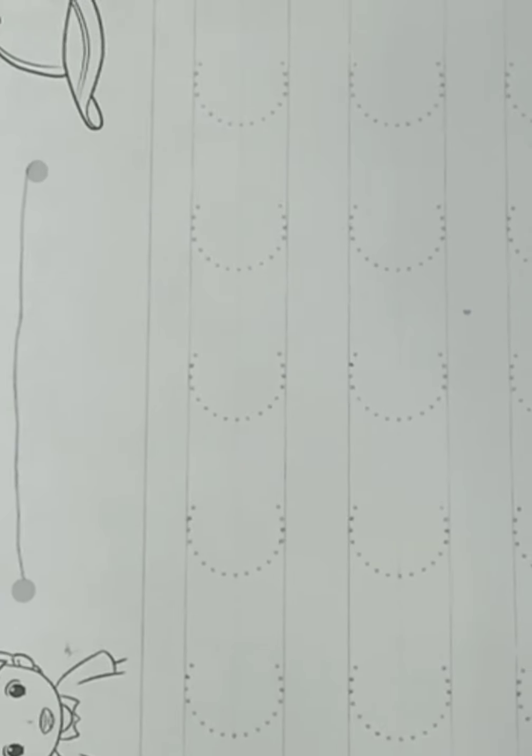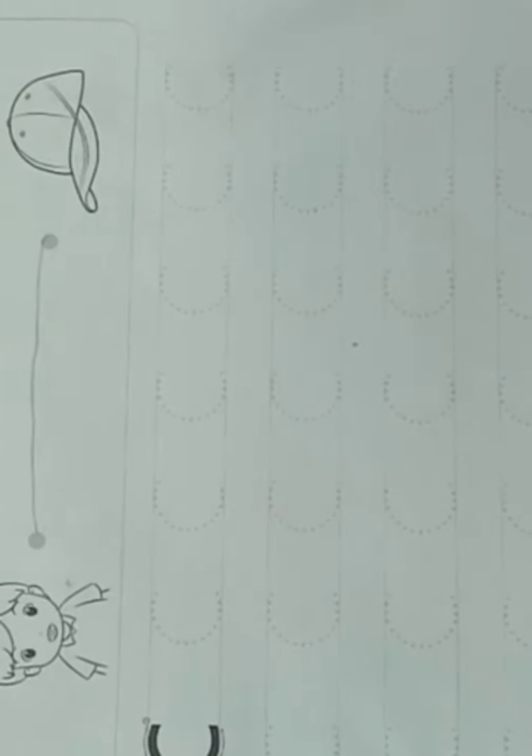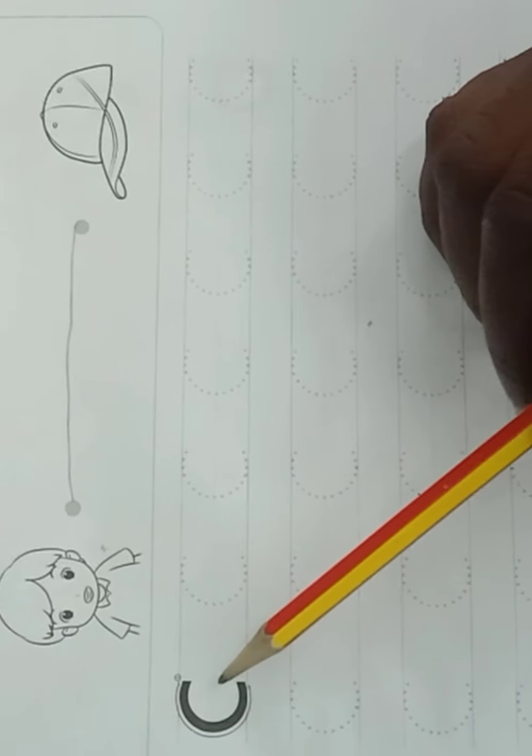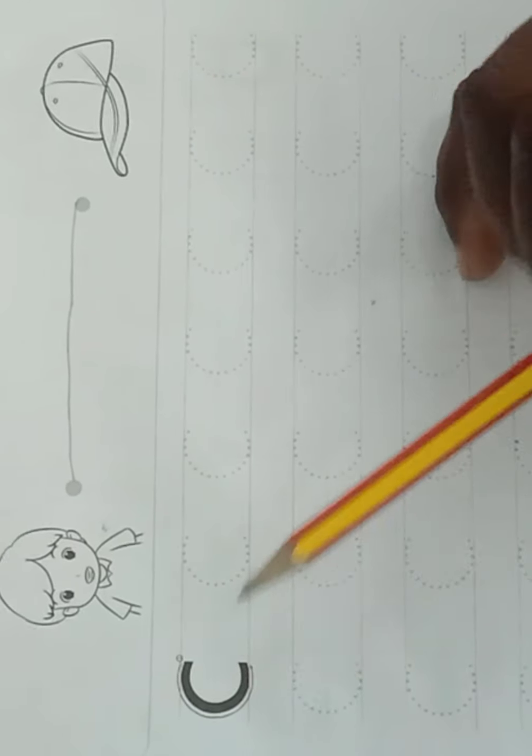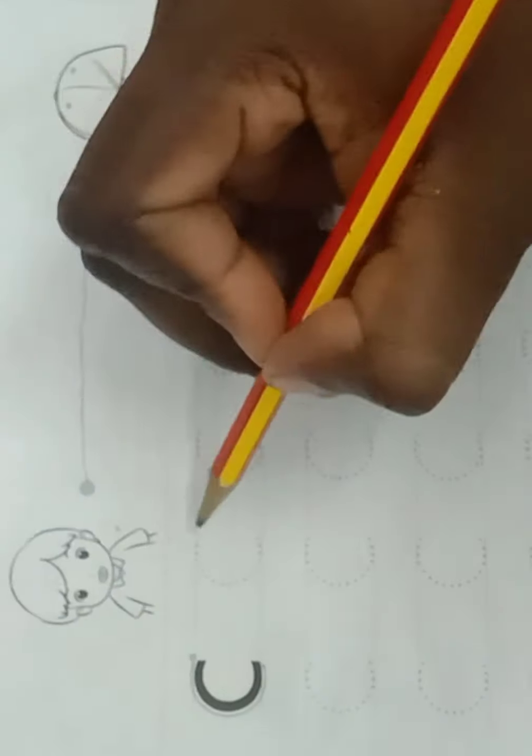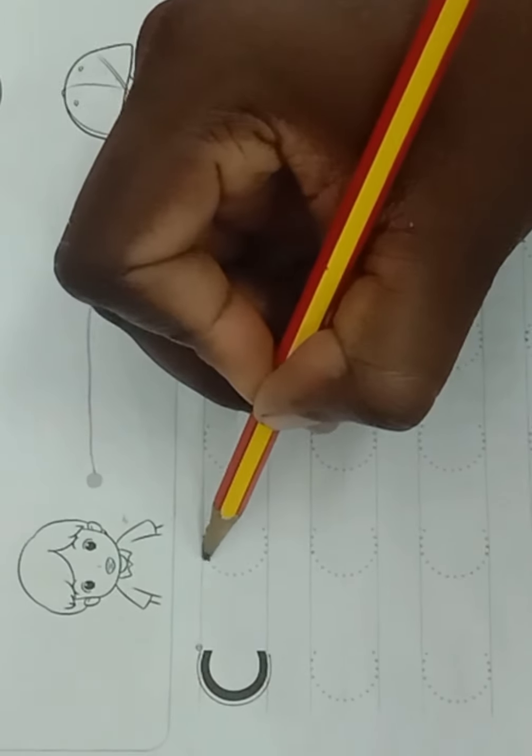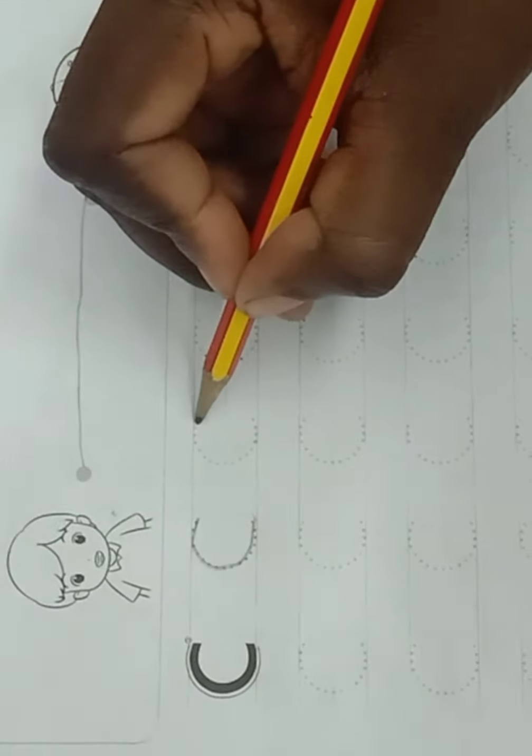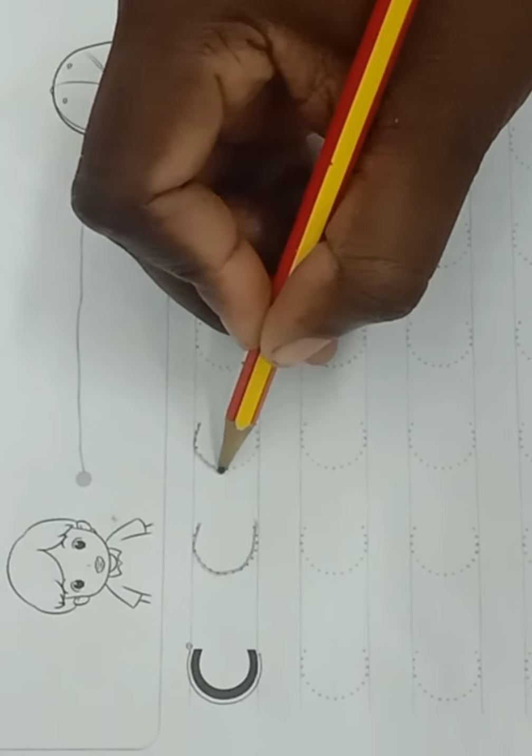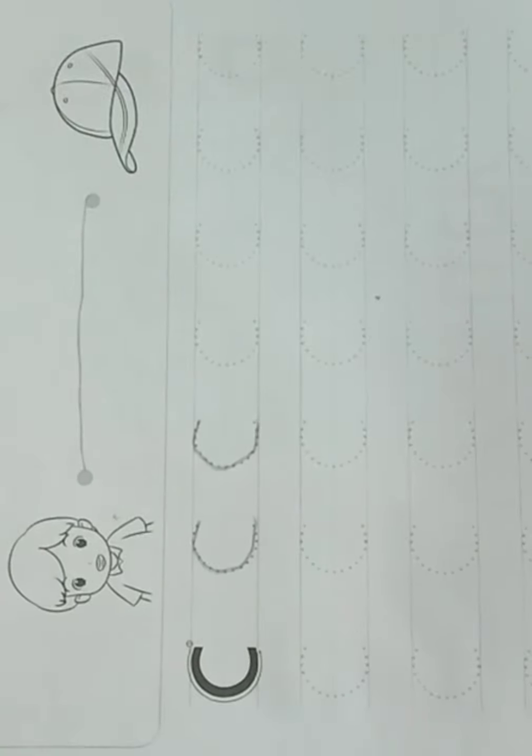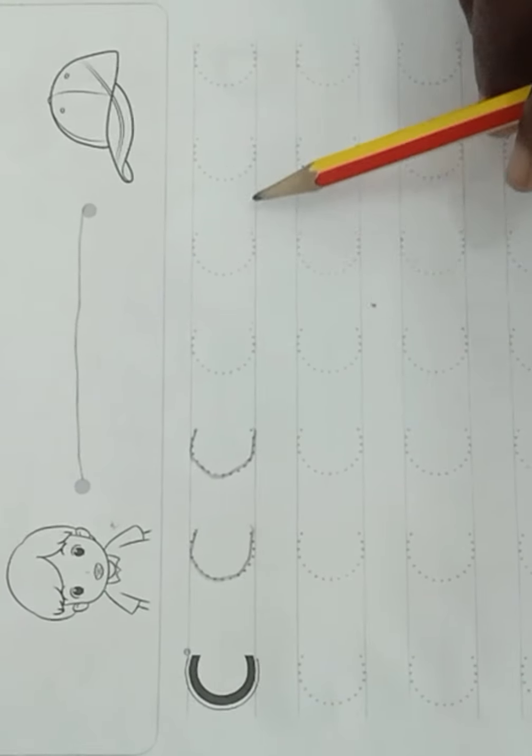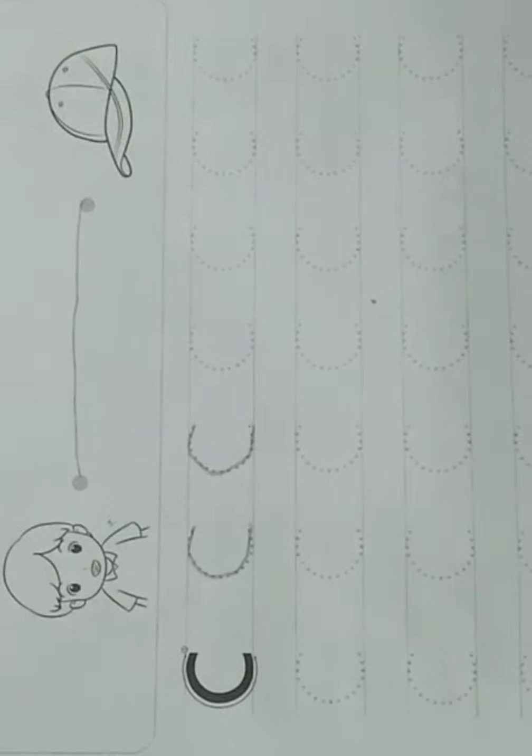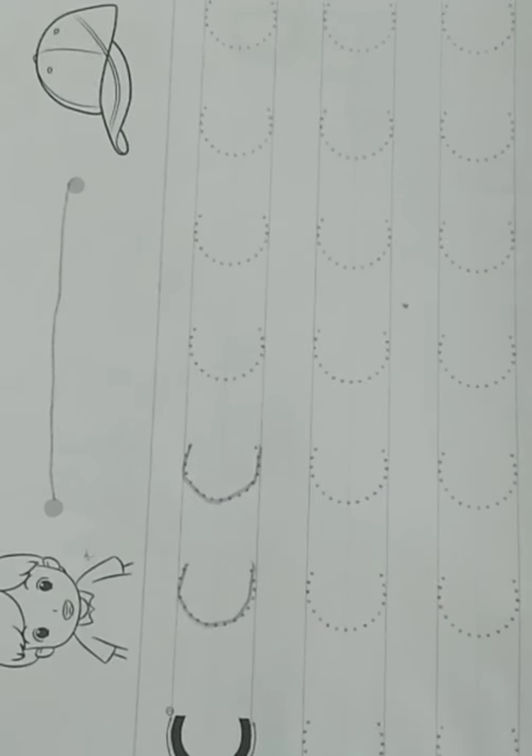So you write the letter C. You follow this one. Letter C. Just write C. Write the next one. Letter C. Good. And you write the rest. Write very beautiful.